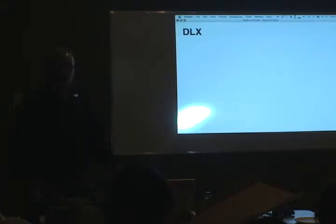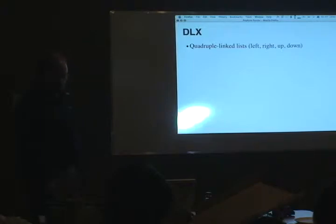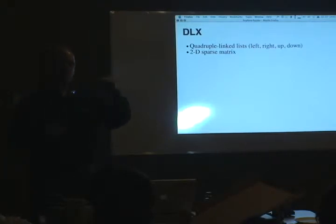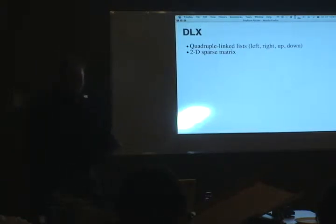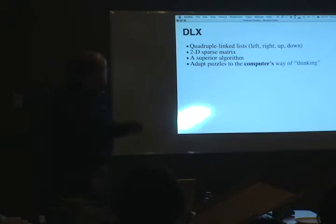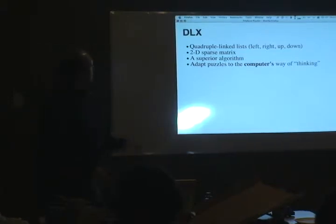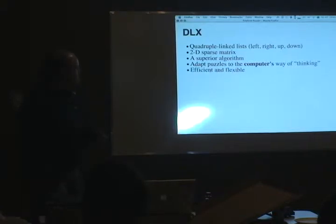So we have the algorithm called DLX — Dancing Links Algorithm X. It uses quadruply linked lists with left, right, up, and down, representing a two-dimensional sparse matrix. You only need nodes for the ones, not the zeros, which is an efficient use of space. When I read this, it was so different from what I had done myself and so obviously superior that it sort of blew my mind. What it does is adapt the puzzles to the computer's way of thinking, not my way of thinking. I couldn't teach it to think the way I do — this way it can do its work the way it does it. It's a very efficient and flexible system.